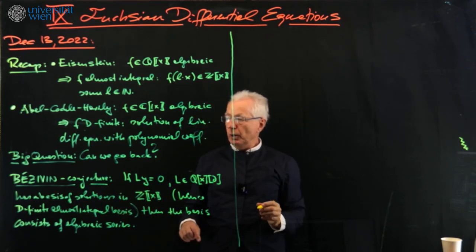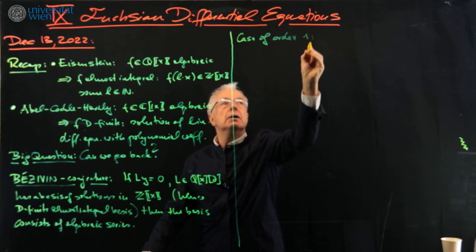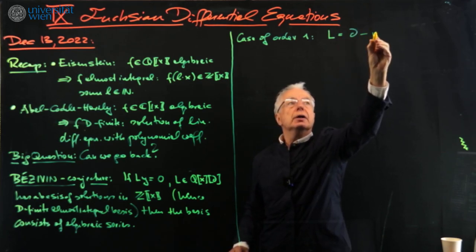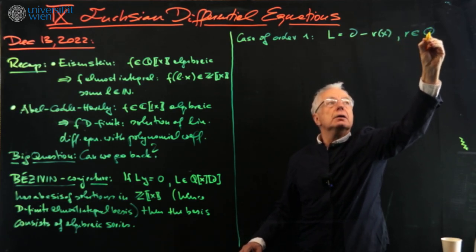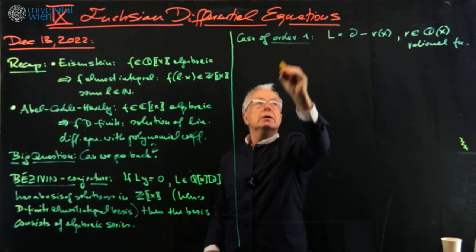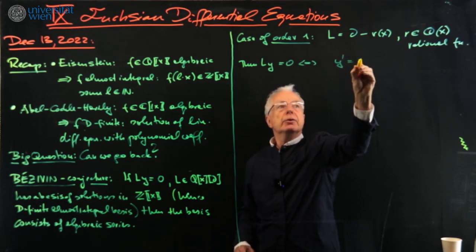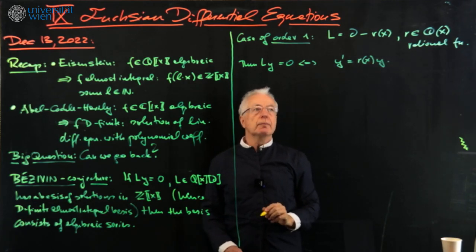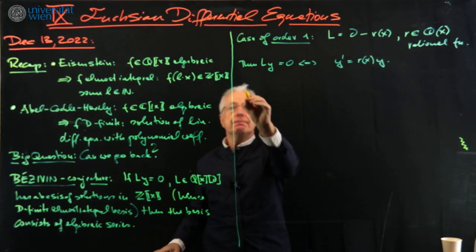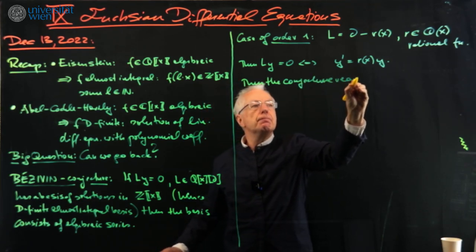I think this is a very elegant statement, easy to understand, hard to prove—actually it's open. It is philosophically interesting because it combines analysis, which appears in the differential equation, with algebraicity. For order one, L would be just del - R(X), R a rational function.